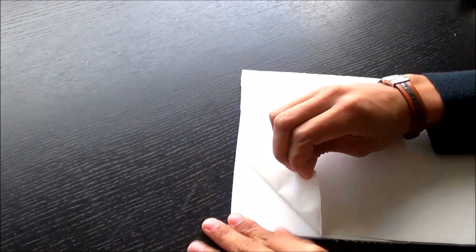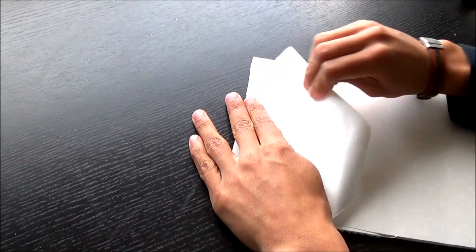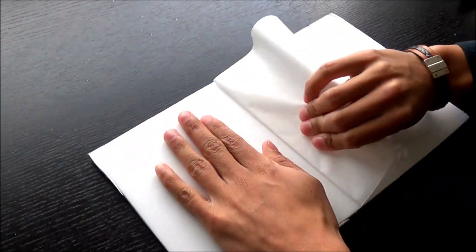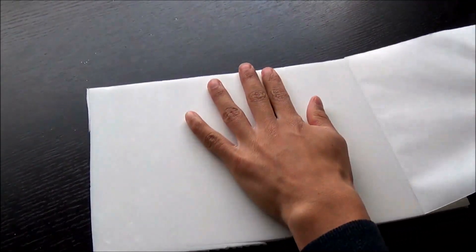To start off we're going to get a piece of foam board and start pulling the paper off it. Foam board has paper on both sides and foam in the middle, so go ahead and pull the paper off of both sides of the foam board.